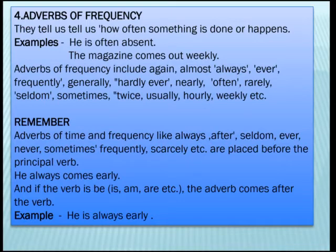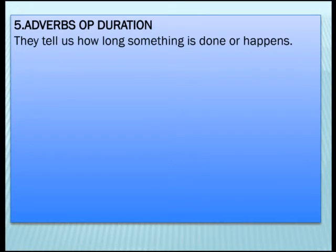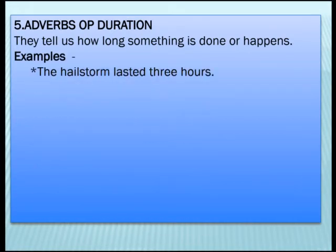To summarize: 'He always comes early' — adverb before the main verb. Now moving on to the fifth type: adverbs of duration — they tell us how long something is done or happens. For example: 'The hailstorm lasted 3 hours.'